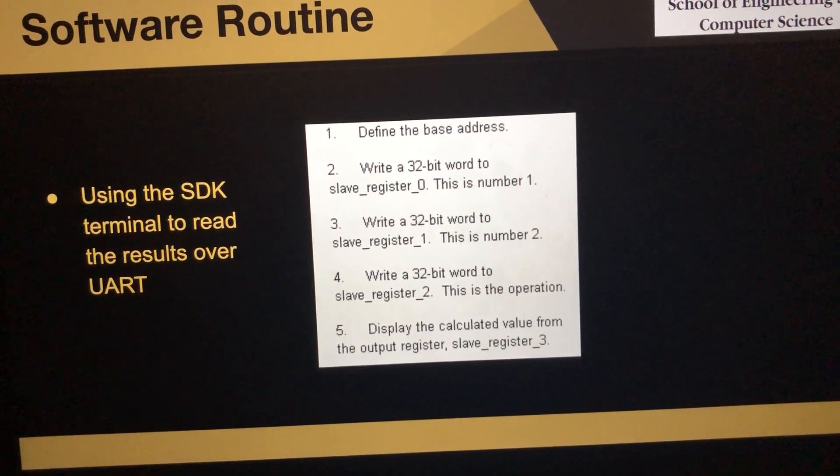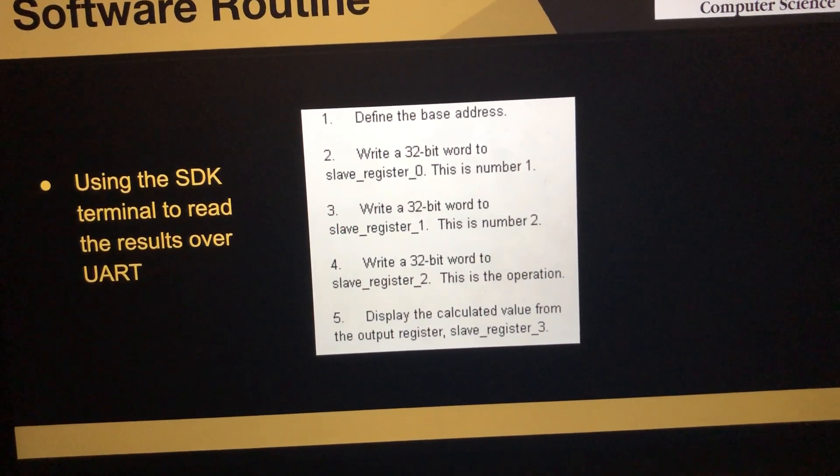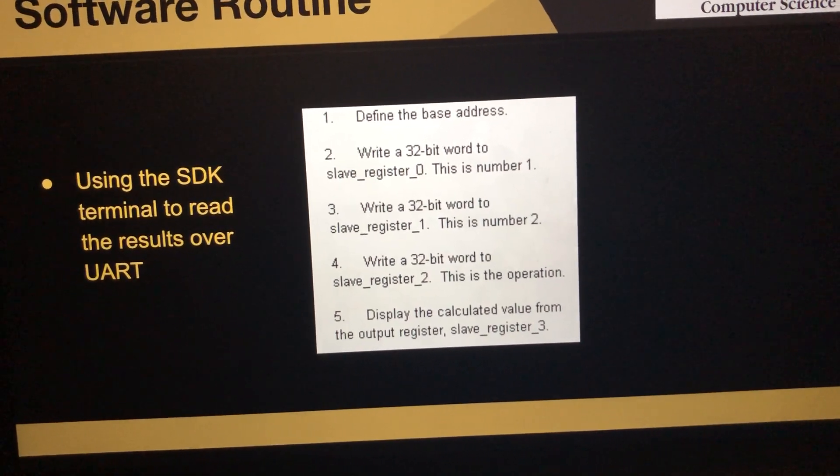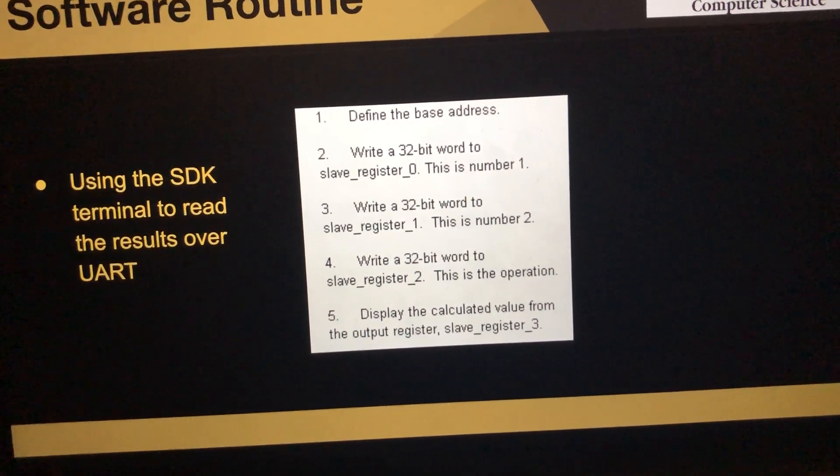We write a third 32-bit word to slave register 2, which represents the operation: add, subtract, or multiply.